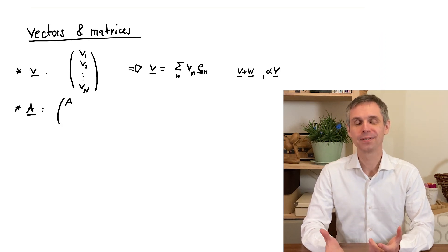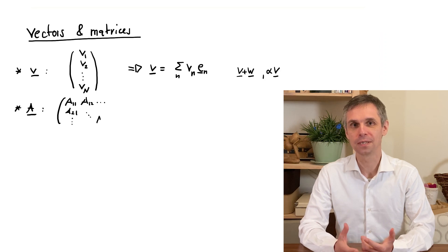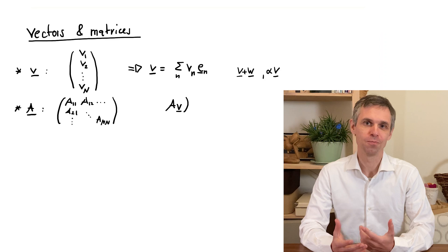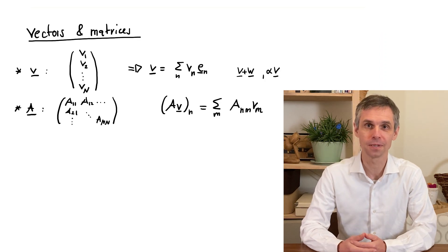The matrices that we will encounter are square matrices with equal numbers of components in both directions. And using the standard rule of matrix multiplication, the product of such a matrix by a vector gives another vector with the same number of components.